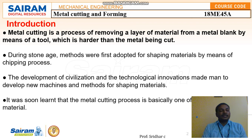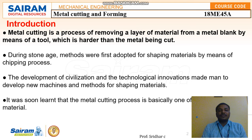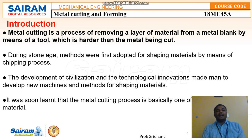Metal cutting processes originated in the stone age, when people shaped materials using the chipping process — removing very small amounts of material to get a desired shape. Later, the development of civilization and technological innovations led humans to develop new machines and methods for shaping materials. It was then learned that metal cutting is basically a process of shearing the work material — removing the layer of excess material from the workpiece to get the desired shape and size.